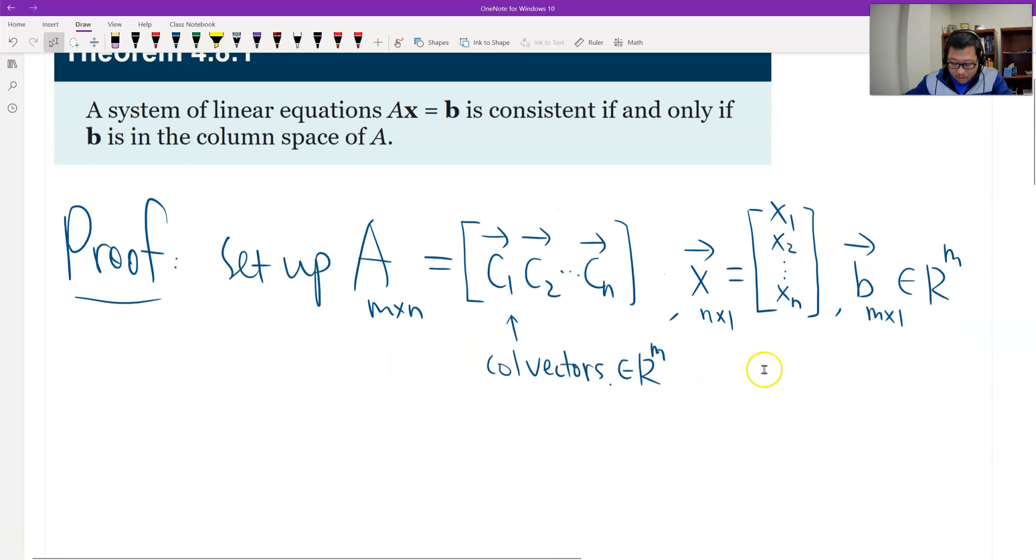And then, so our question says Ax = b is consistent. It started from Ax = b, it's consistent. Because I know I already blocked, I already cut a partition the A into this way, and the x is x1 to xn.